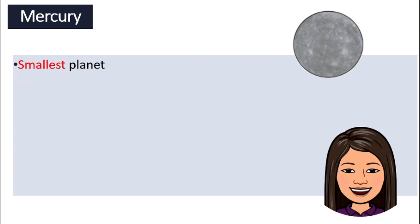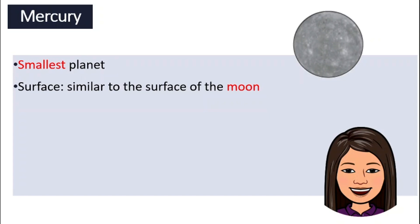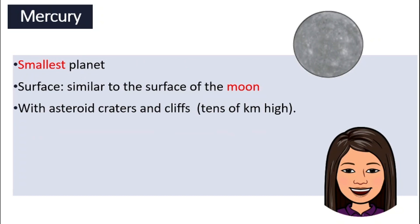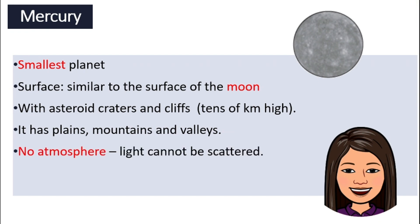Mercury is the smallest planet in our solar system. The surface of Mercury is very similar to the surface of the moon. You will be able to see some asteroid craters and also cliffs that are tens of kilometers high. It has plains, mountains, and valleys. But one special thing about Mercury is that it does not have an atmosphere.